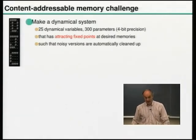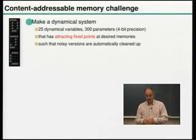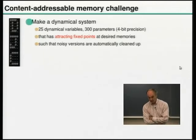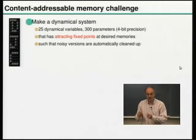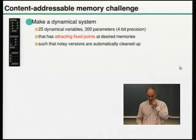I'll show you today a solution to this problem. The task is to have a dynamical system with 25 variables — each memory is a 25-bit state. The system should have fixed points at say three desired memories, and by adjusting roughly 300 parameters you should be able to place those fixed points at the right locations. Those fixed points should be attracting, so if you're near a desired memory the dynamics take you to it, cleaning up any added noise.